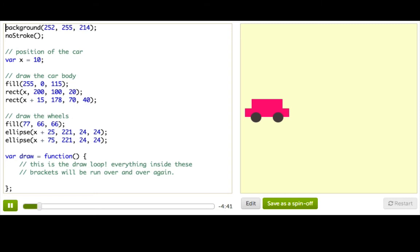Over on the right, you can see there's a cute little car on a lovely yellow background, and yes, I did design that car myself. Anyways, over here, you can see we're setting this beautiful background color, and the car doesn't have any outlines, so we're calling this no-stroke function.